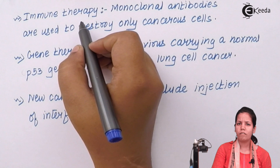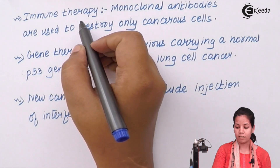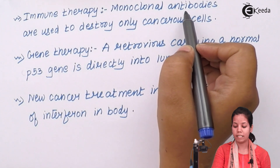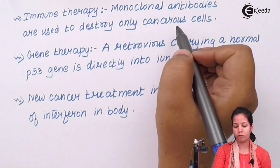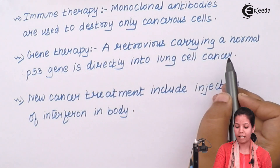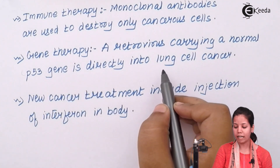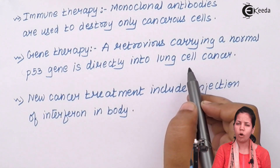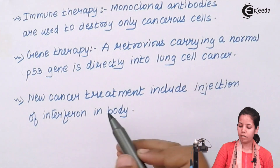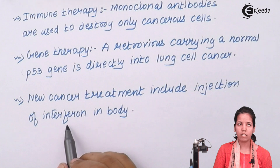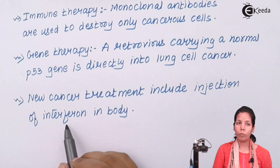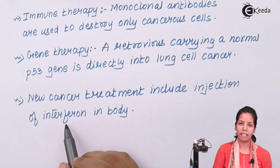Immunotherapy is one of the techniques used for treatment of cancer. Monoclonal antibodies are ready-made antibodies that can destroy only cancerous cells, saving the normal cells of our body. Gene therapy using a retrovirus carrying a normal P53 gene is directly used for lung cancer or bronchial cancer treatment. The newer readily available cancer treatment also includes injections of interferons, which generate a cascade reaction mechanism that can prevent certain non-cancerous reactions from occurring in our body.